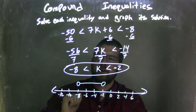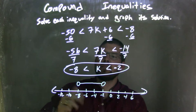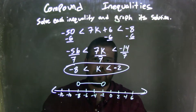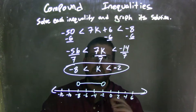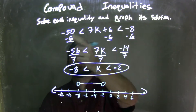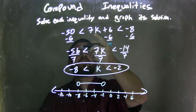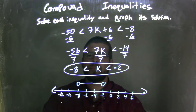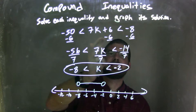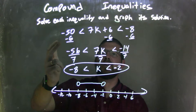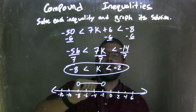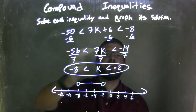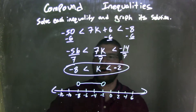Our graph here matches our final answer, which is negative 8 is less than k, which is less than negative 2. So to recap: we were given negative 50 is less than 7k plus 6, which is less than negative 8. I subtracted 6 from all parts, which gives 7k by itself in the middle, negative 56 on the left, and negative 14 on the right.